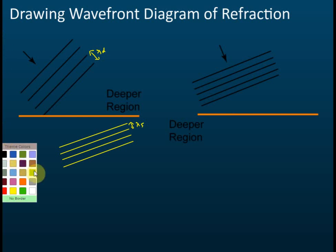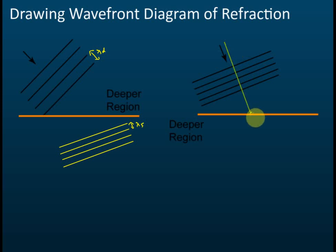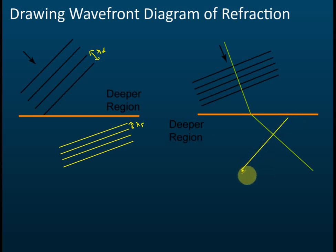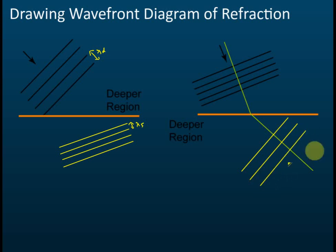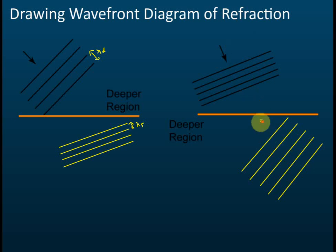Now for shallower to deeper regions: the wave will be refracted away from the normal. After you have the directions, sketch your wavefronts at 90 degrees — at right angles to the direction of wave propagation. At deeper regions, the wavelength is longer, so you must show that the wavelength is longer. After drawing, erase the guide. The wave is refracted away from the normal and the wavelength is longer.